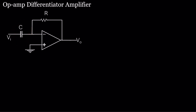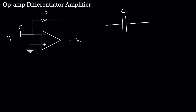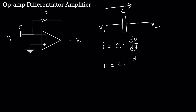We need to figure out the output voltage V0. To begin, we need to know the current equation of the capacitor. This is the symbol of the capacitor C. If this voltage is V1 and this voltage is V2, then we can write i = C dv/dt. If the current flows in this direction, we write i = C d(V1 - V2)/dt.